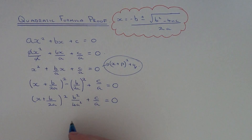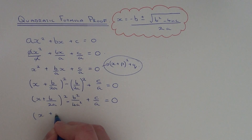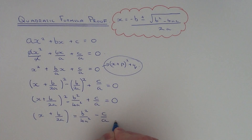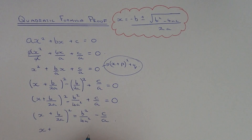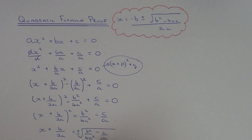The next thing to do is rearrange this and make x the subject. We bring those two terms to the right-hand side, then we can square root the right-hand side — don't forget to put your plus and minus there. The next thing is to bring the b over 2a term over to the left.